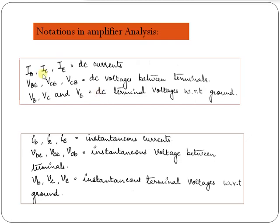DC currents are represented by uppercase letters with uppercase subscripts, whereas DC voltages between terminals and DC terminal voltages with respect to ground are all represented by uppercase. The instantaneous AC currents and voltages between terminals are represented by lowercase letters, and even the subscripts are also lowercase.